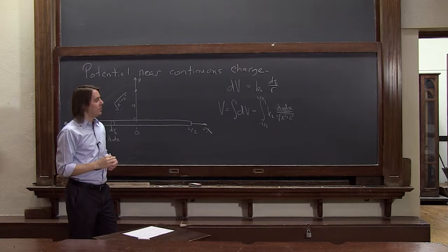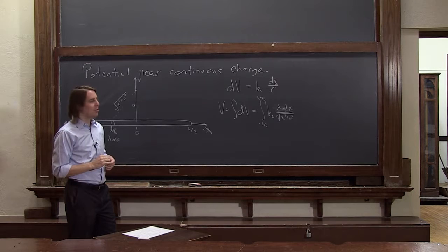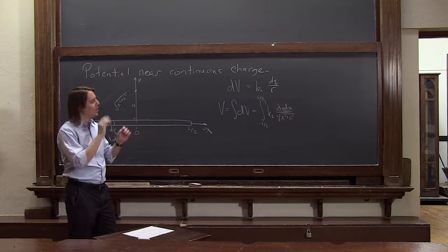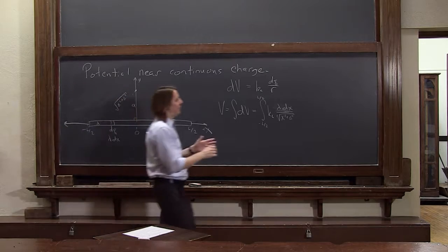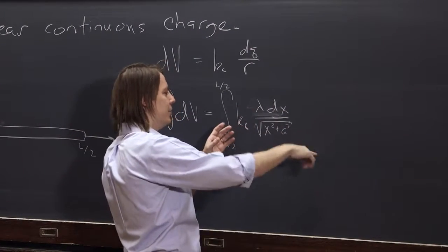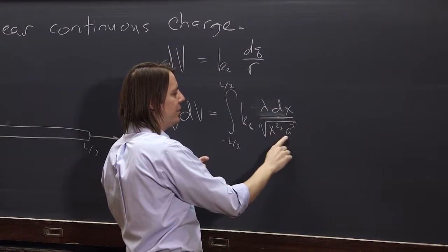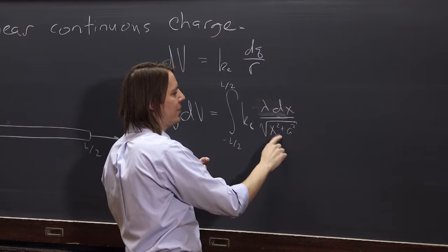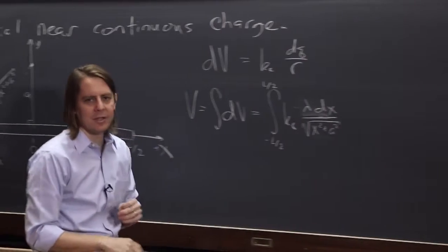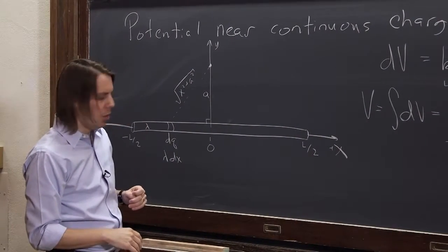That's it — we just have to do that integral. But this is one we can't just do by hand; you have to use a complicated method or look it up in a table. You might think: raise x squared plus a squared to the minus one-half, then raise to one-half and divide. But that won't work because the derivative gives you 2x, and there's no x to cancel it out. So we look it up.